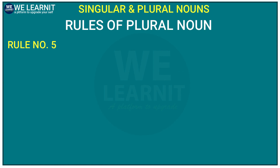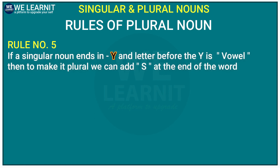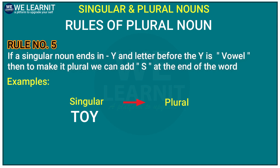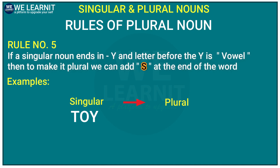Now, let's move to the fifth rule of plural nouns. If the singular noun ends in -y and the letter before the -y is a vowel sound, then to make it plural, we need to add -s. For example, 'toy' — the -o is a vowel sound used before the -y. So as per the fifth rule, we add -s, and 'toy' becomes 'toys'.